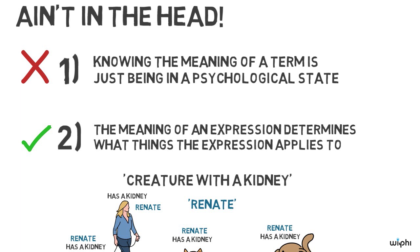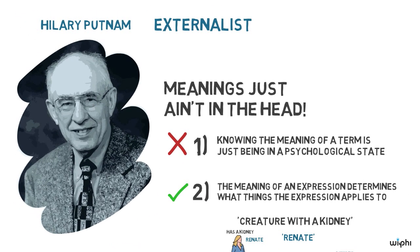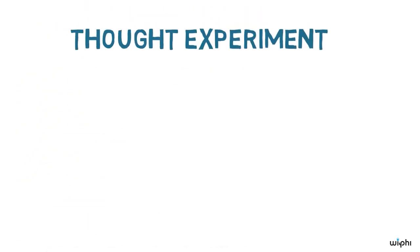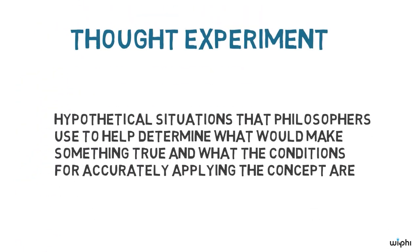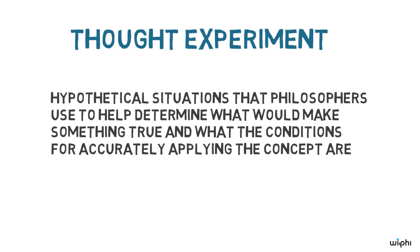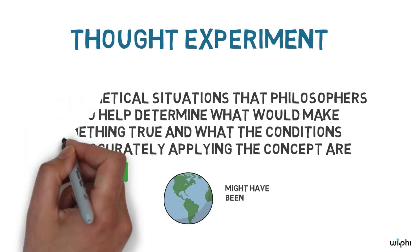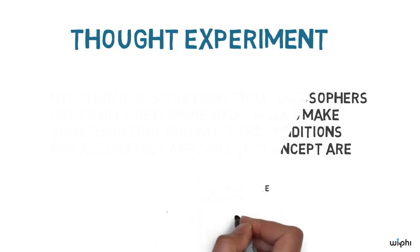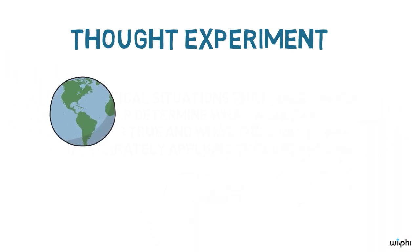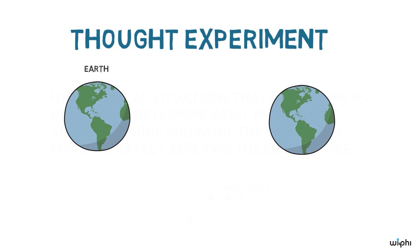Meanings, he concludes, are not psychological states. Meanings just ain't in the head. He argues for the conclusion by appealing to thought experiments. Thought experiments are hypothetical situations that philosophers use to help determine what would make something true and what the conditions for accurately applying a concept are. They help us to look beyond the way our world really is to consider ways the world might have been. The most famous thought experiment for externalism focuses on a scenario involving Earth and another planet we could call Twin Earth.